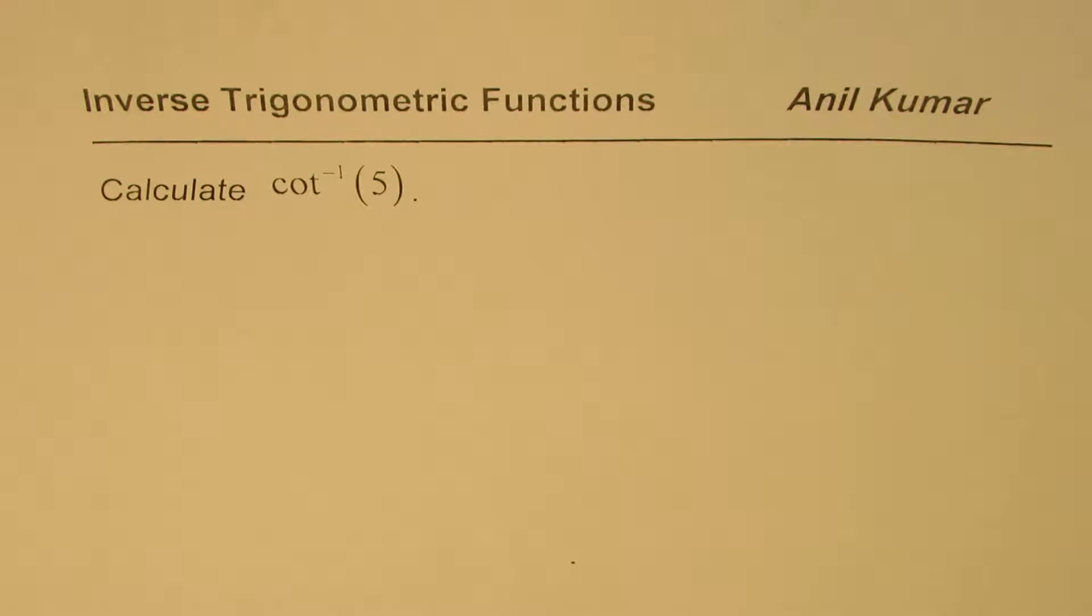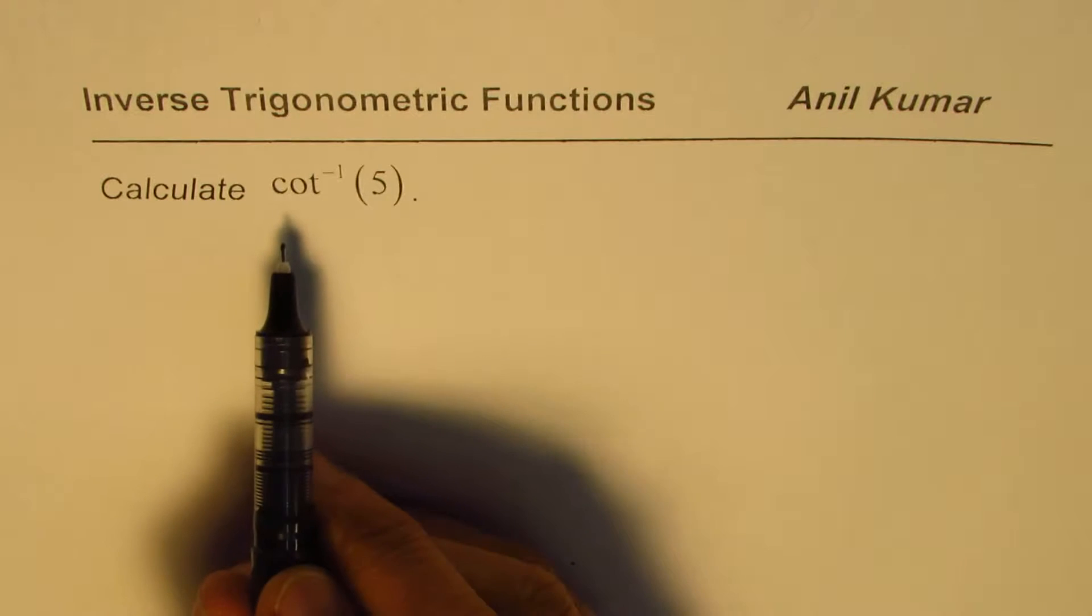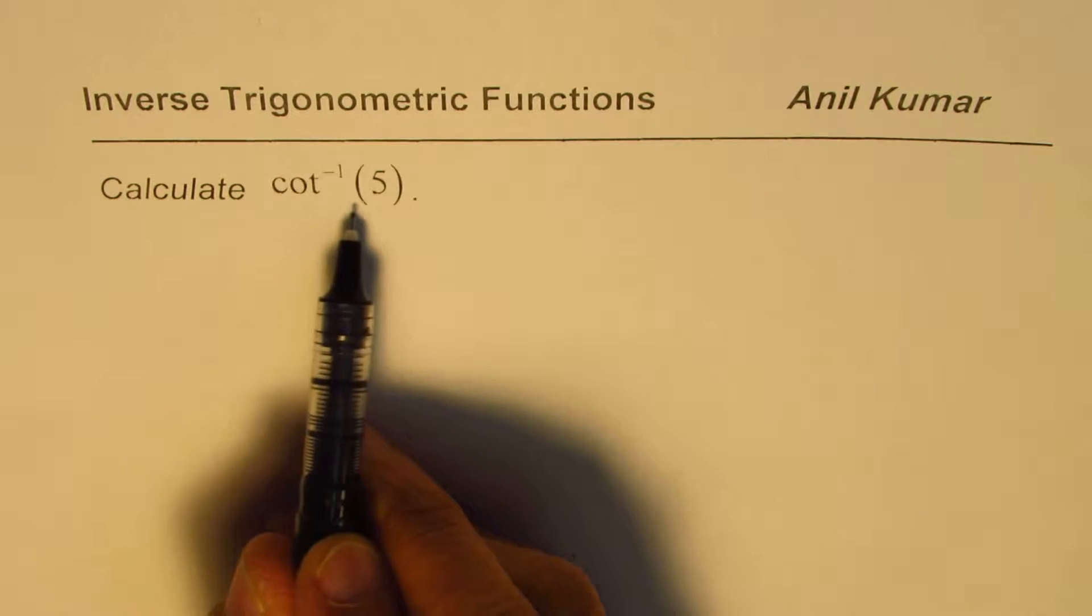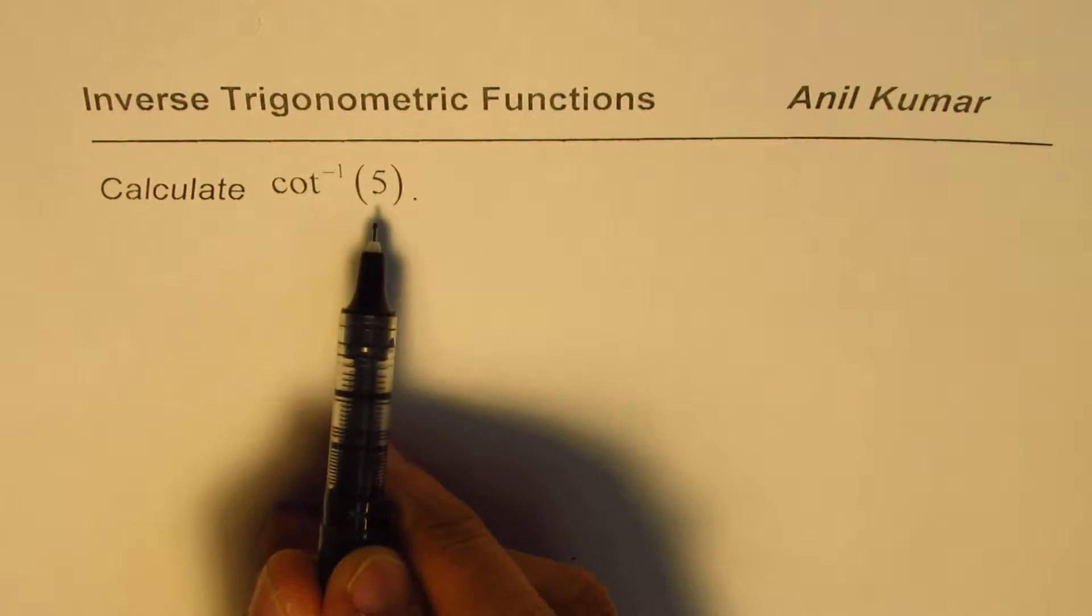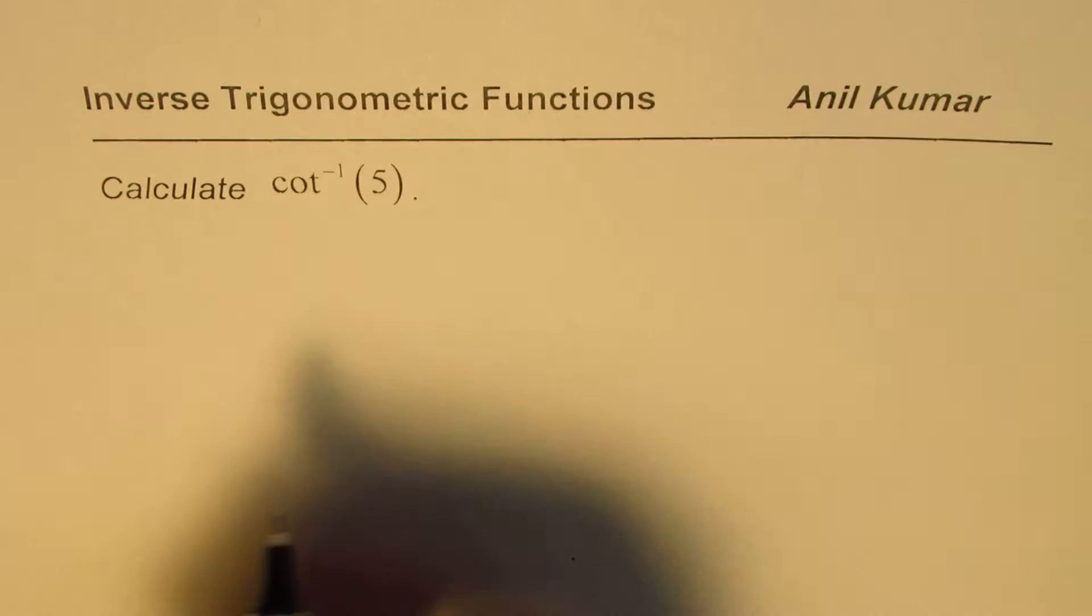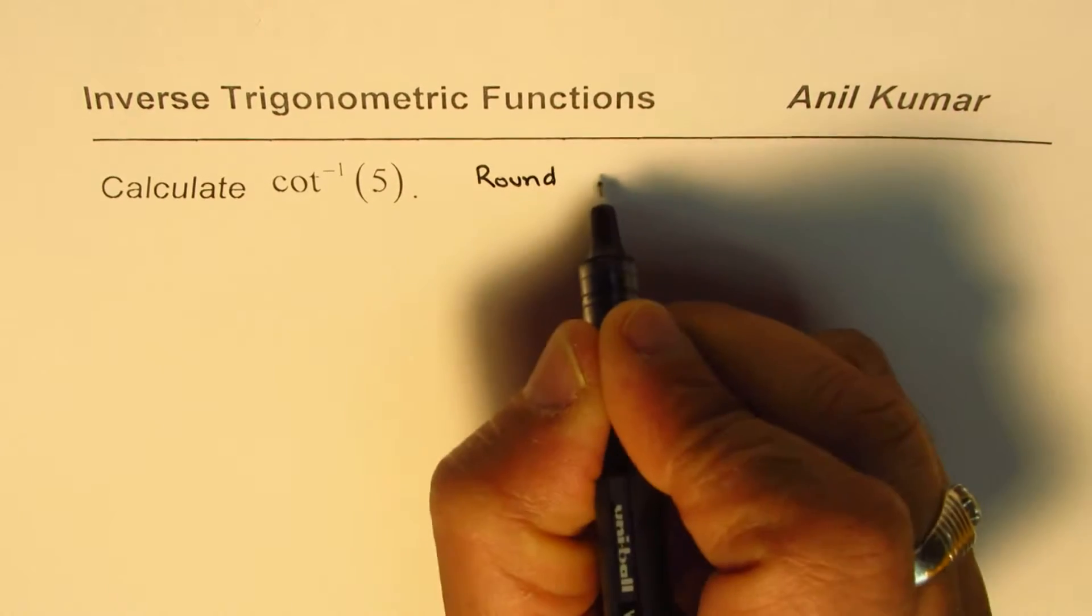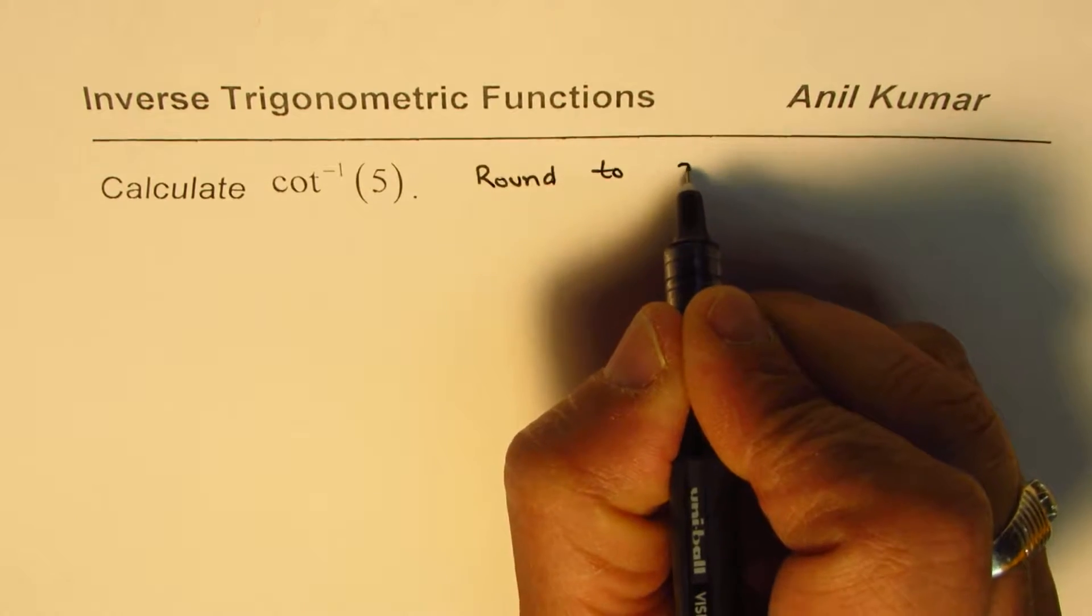I'm Anil Kumar and in this video we will learn how to calculate inverse trigonometric functions. We need to calculate cot⁻¹(5), which can be approximately calculated using the calculator. We'll round the answer to two decimal places.